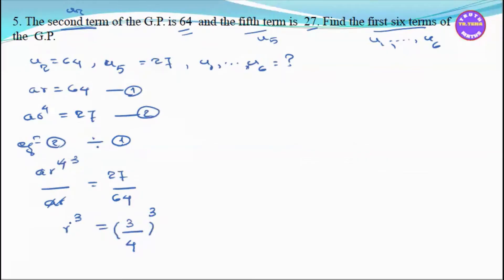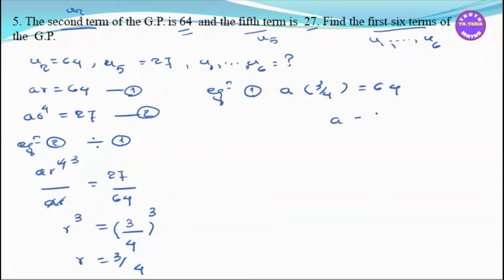So we have to substitute into this equation. The equation gives a equals 64. So a equals 64 into the ratio 3/4.